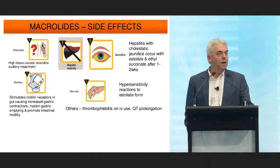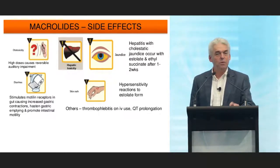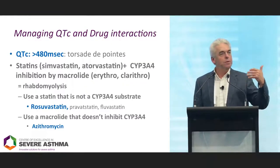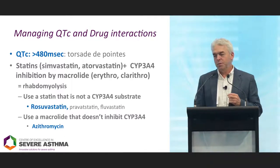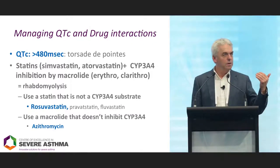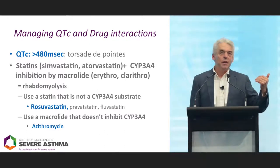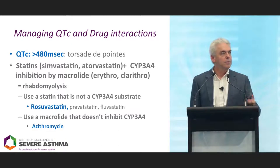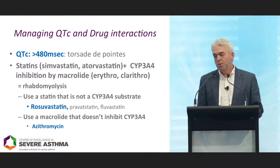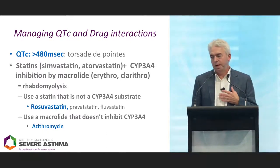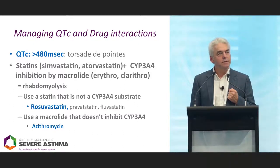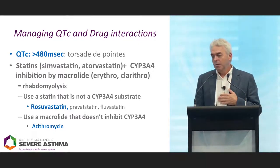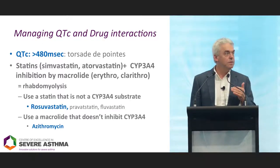Diarrhea: macrolides stimulate motilin receptors, and we did see some diarrhoea signals in our patients. We had rules to minimise toxicity risk. For QTC prolongation, we had a cut-off of 480 — higher than earlier studies, but that's probably an overreaction, and 480 is where industry trials are now settling. There's an important interaction with statins: some statins are substrates for a particular cytochrome P450 enzyme. If you inhibit that enzyme with a macrolide, the patient is at risk of rhabdomyolysis. We managed this by swapping people to rosuvastatin.